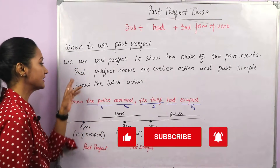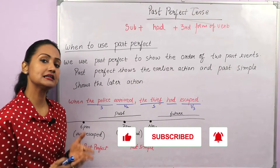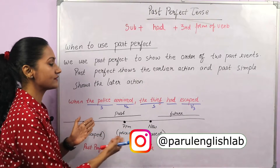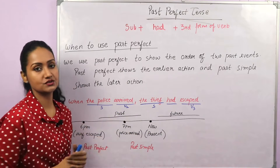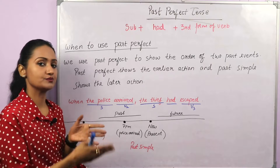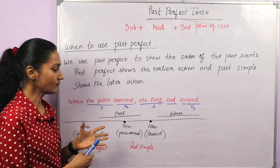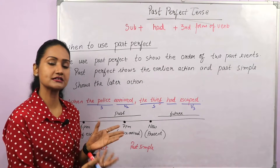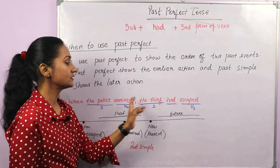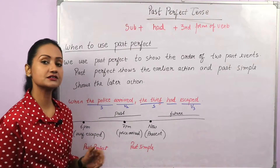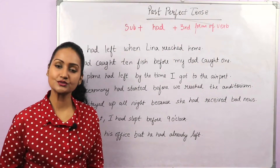What you have to remember is this rule: past perfect shows the earlier action, and past simple shows the later action. That is how you frame these kinds of sentences. Generally we use past perfect with this combination — simple past and past perfect. You can say the two sentences in any order; it doesn't make a difference. For example, 'When the police arrived, the thief had escaped' or 'The thief had escaped when the police arrived' — the meaning is the same.